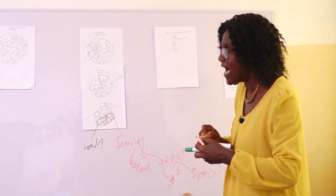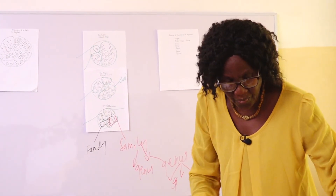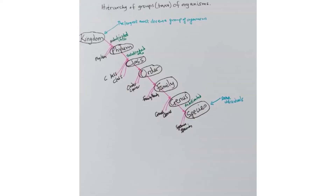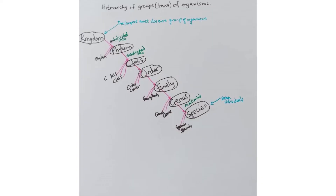That is how you group organisms into kingdom, phylum, class, order, family, genus, and species. Therefore, every organism you see belongs to a kingdom, phylum, class, order, family, genus, and species.